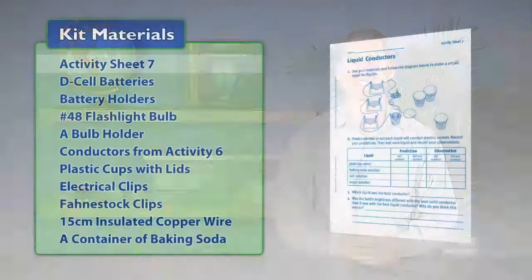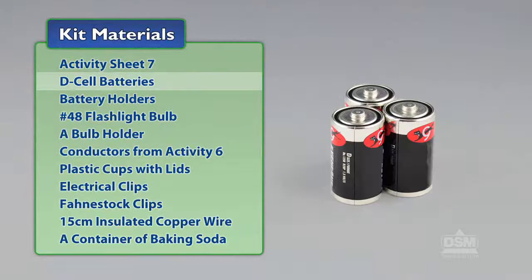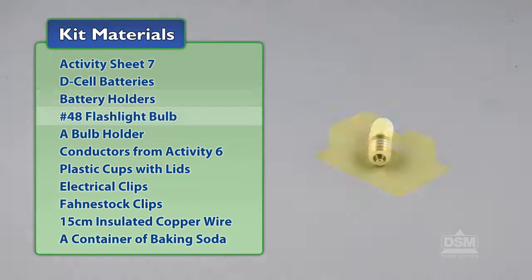You will need the following materials from the kit: Activity Sheet 7, D-Cell Batteries, Battery Holders, No. 48 Flashlight Bulbs, and Bulb Holders.